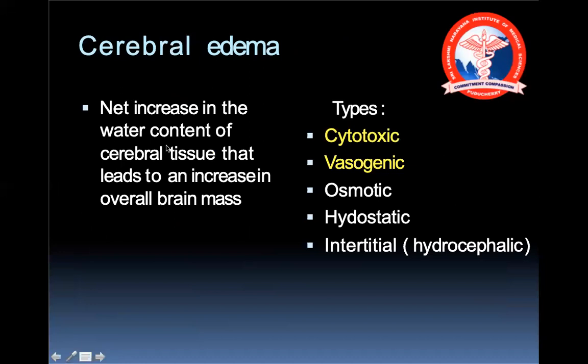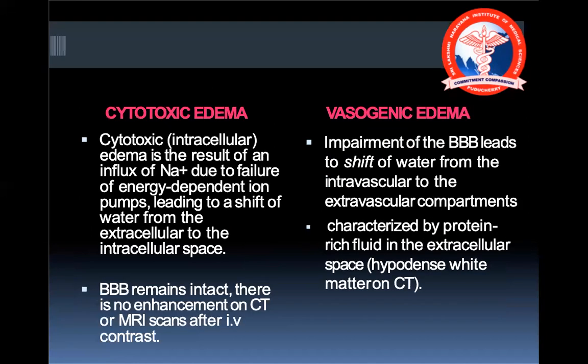Cerebral edema is a net increase in water content of cerebral tissue leading to increased overall brain mass. Cytotoxic edema results from influx of sodium due to failure of energy-dependent ion pumps, causing a shift of water from extracellular to intracellular space. The blood-brain barrier in cytotoxic edema is intact and there is no enhancement on CT or MRI even after IV contrast. In vasogenic edema, there is impairment of the blood-brain barrier leading to a shift of water from intravascular to extravascular compartment, characterized by protein-rich fluid in the extracellular space and hypodense white matter on CT.